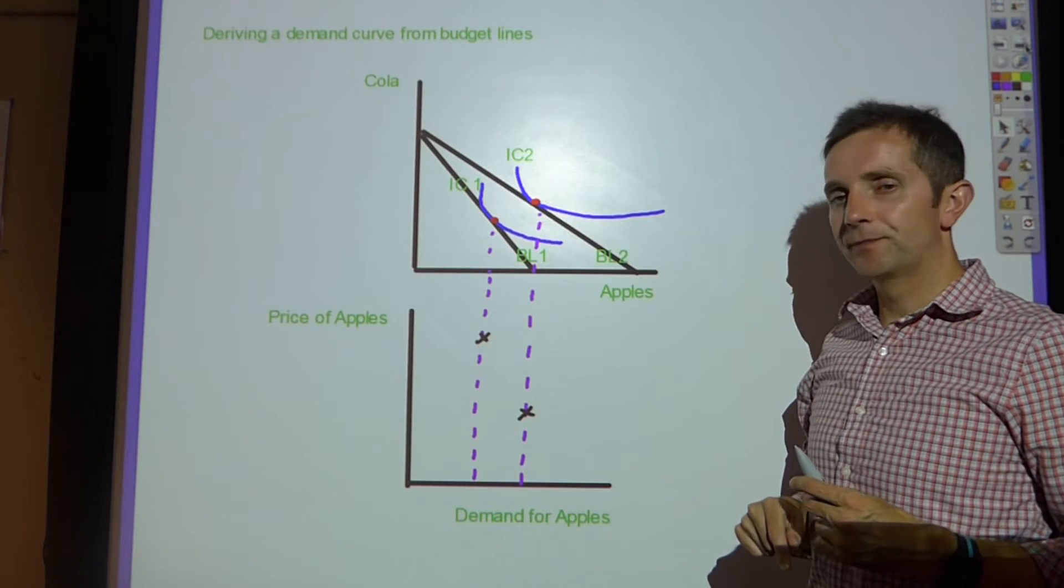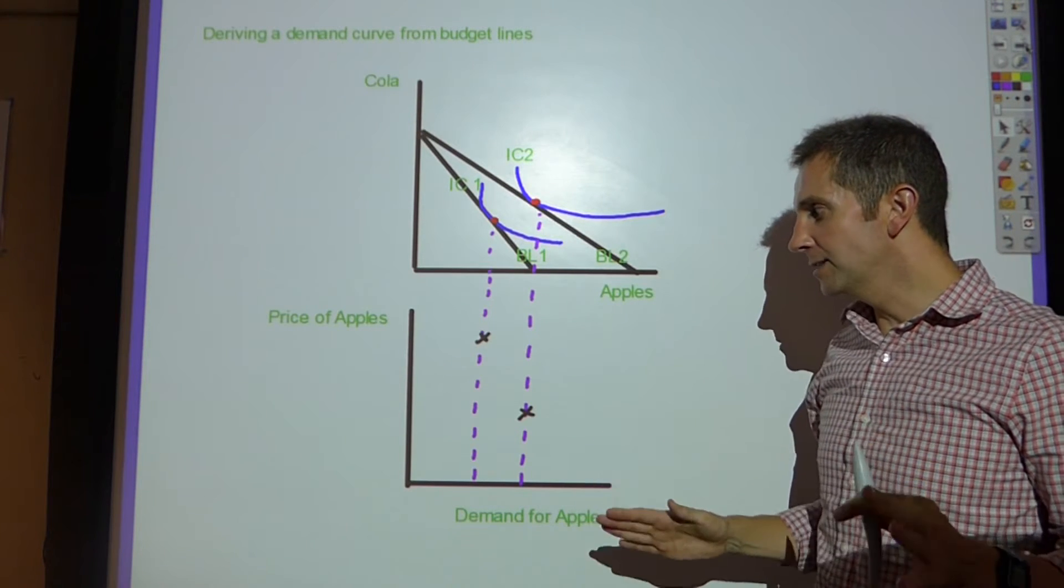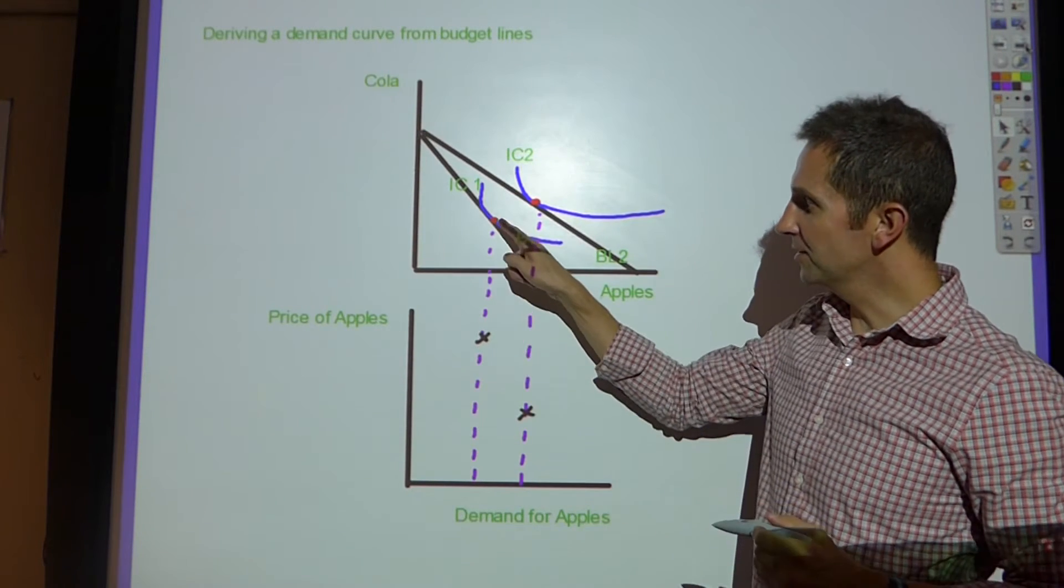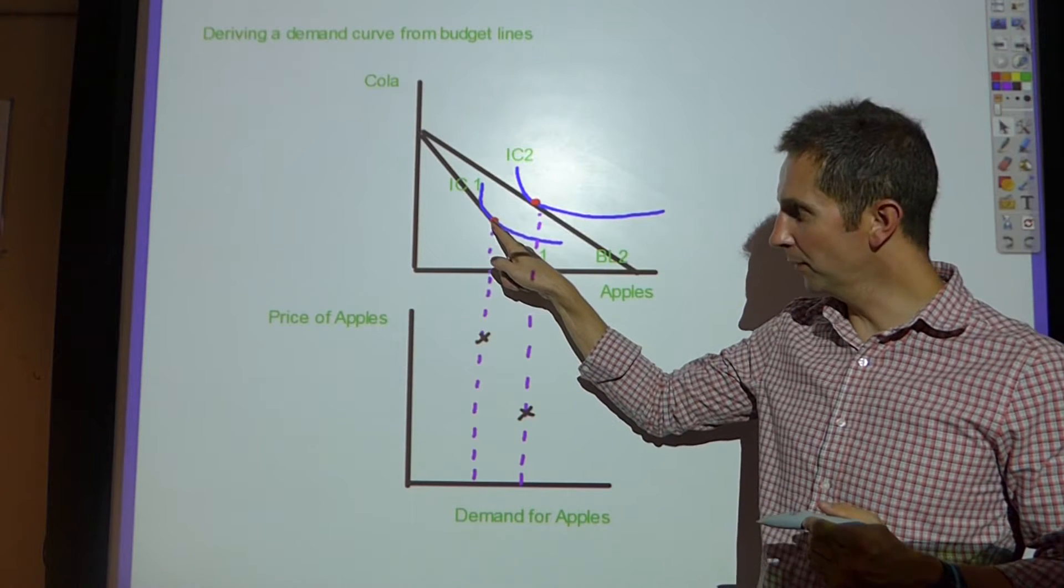We could assume a couple of things and hence draw a demand curve for apples. So I'm assuming that at this point here, the initial equilibrium point here.